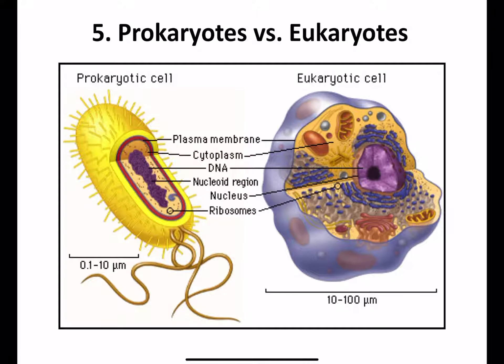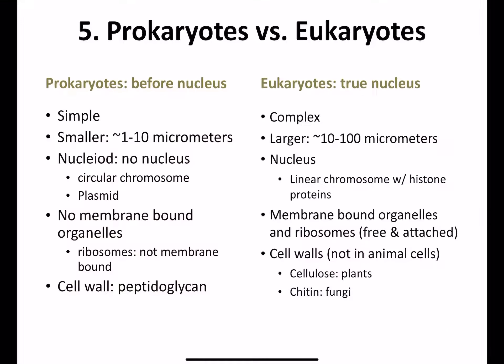Regarding size, prokaryotes are quite a bit smaller than eukaryotes. The key things are going to be how they reproduce and having these membrane-bound organelles. This is a nice compare and contrast chart on prokaryotic versus eukaryotic cells.